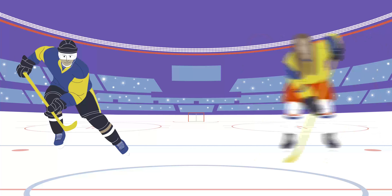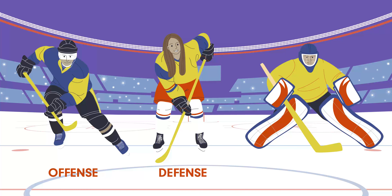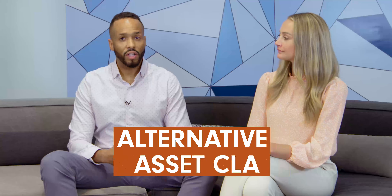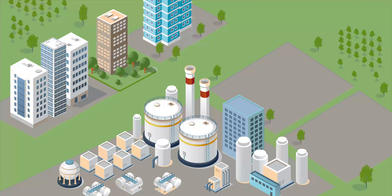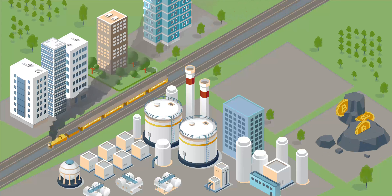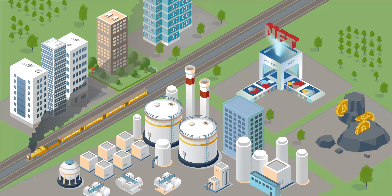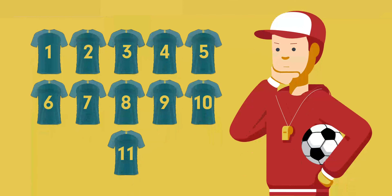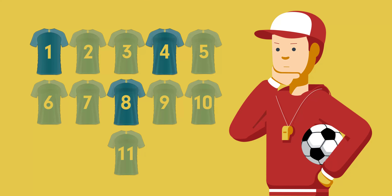Stocks, bonds and cash are all considered traditional asset classes. Think of these like your core members on a sports team such as offense, defense and a goalie. There are also alternative asset classes. These include a wide range of investments including commodities, real estate, infrastructure, digital assets and even collectibles. You can think of those as your special teams or role players that you would use in special situations or to achieve specific goals, like power plays in hockey or bringing somebody on to take a free kick in soccer.